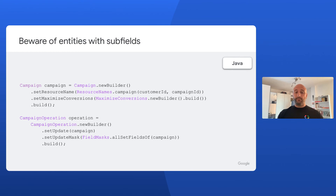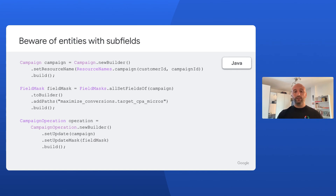When you want to mutate an entity that has subfields, though, you have to pay special attention to these subfields. In this case, we want to set the bidding strategy of a campaign to maximize conversions. However, this mutate operation will fail. The maximize conversions object being passed is empty, and empty objects are not allowed in field masks, to prevent values from accidentally being cleared. The correct way to achieve the behavior we want, then, is to explicitly set the maximize conversions path in the field mask, along with the targetCPAMicros property, which is the only mutable property in a maximize conversions object, to tell the Google Ads API that we want to set the maximize conversions property. Because this field is included in the field mask but not in the campaign object, the Google Ads API will set the campaign's bidding strategy to an empty maximize conversions object, without any of its subfields set.